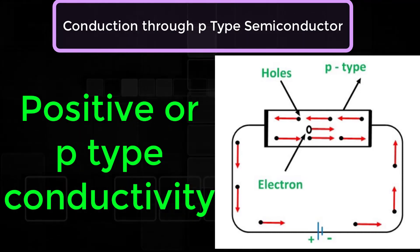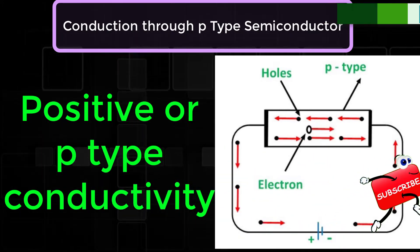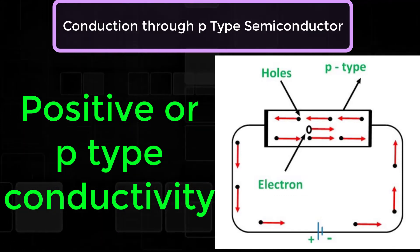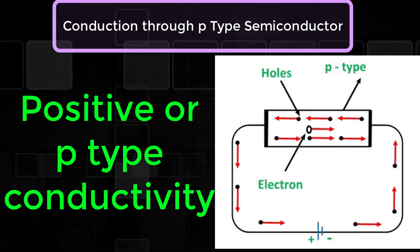As the current flow through the crystal is by holes which are carrier of positive charge, therefore this type of conductivity is known as positive or P-Type conductivity. In a P-Type conductivity, the valence electrons move from one covalent to another.